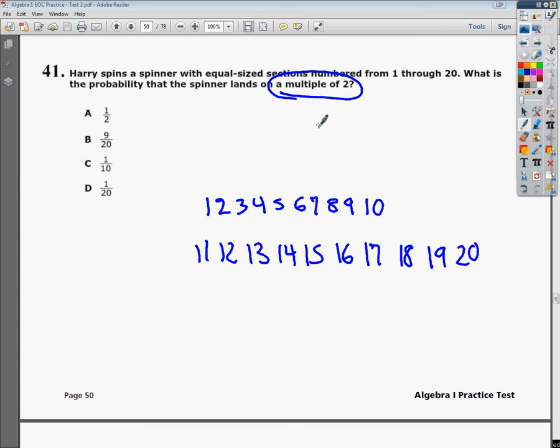Well, multiple is the base of multiply. So basically, you take 2 and then multiply by numbers, and those are the multiples of 2. If I multiply 2 times 1, I get 2. I multiply by 2, I get 4. So basically, the even numbers.